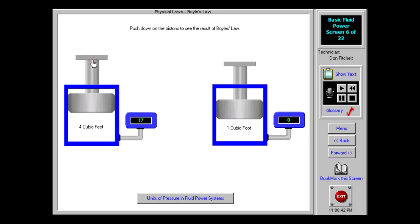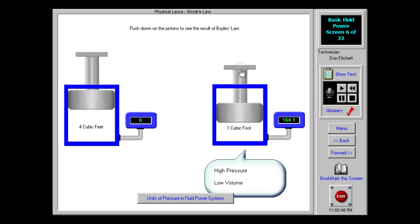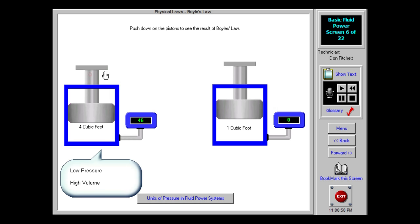Compressed air very nearly follows the law at pressures less than 1,000 psi. However, hydrocarbon gases, such as propane and methane, do not follow Boyle's law.